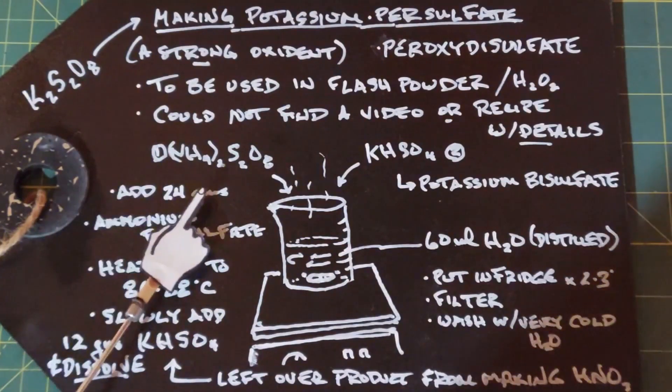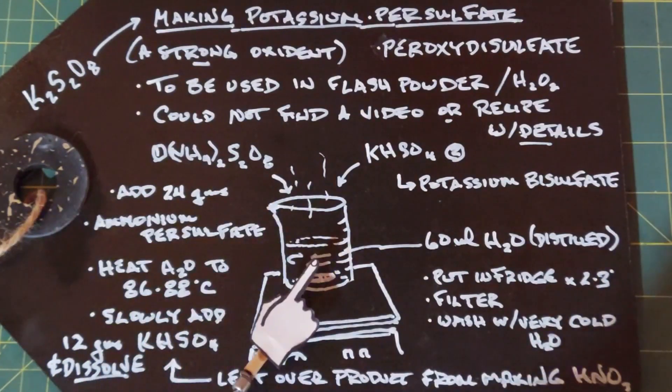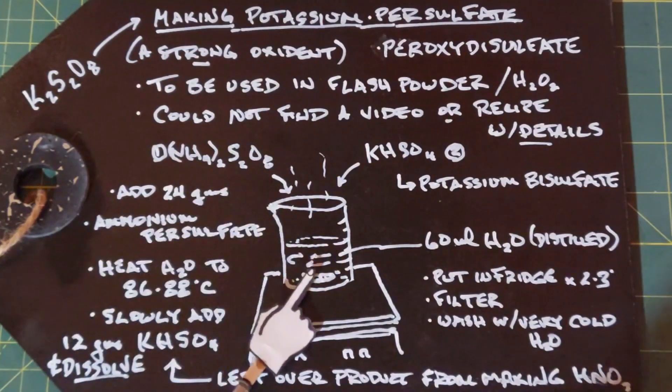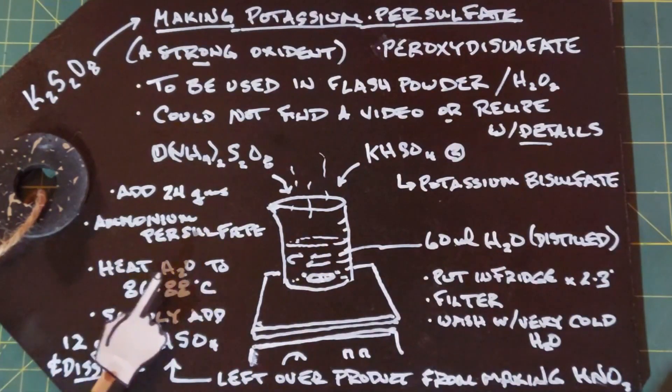So I used 24 grams and slowly added that to the distilled water, which was heating up. This is very soluble in water, so there is no problem doing that whatsoever. Once it got to about 86 to 88 degrees Celsius,